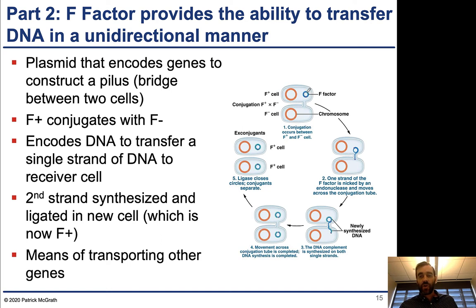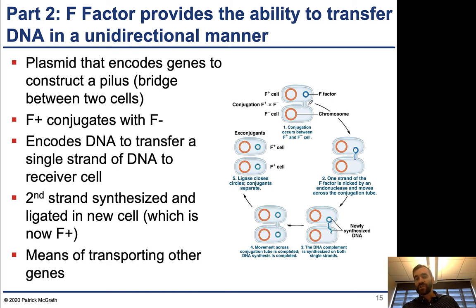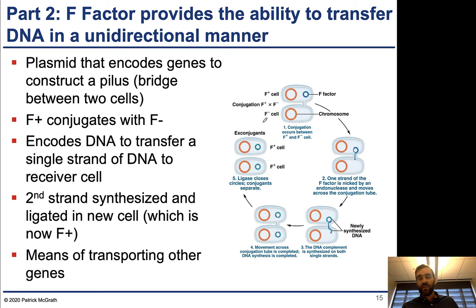This works because the F factor is a plasmid — a small piece of DNA. It encodes genes on this plasmid that instruct the cell how to build the pili. There are genes that are physical components — like the bricks used to build it — and also instructions on how and when to do it. A large number of genes are actually encoded on this plasmid.